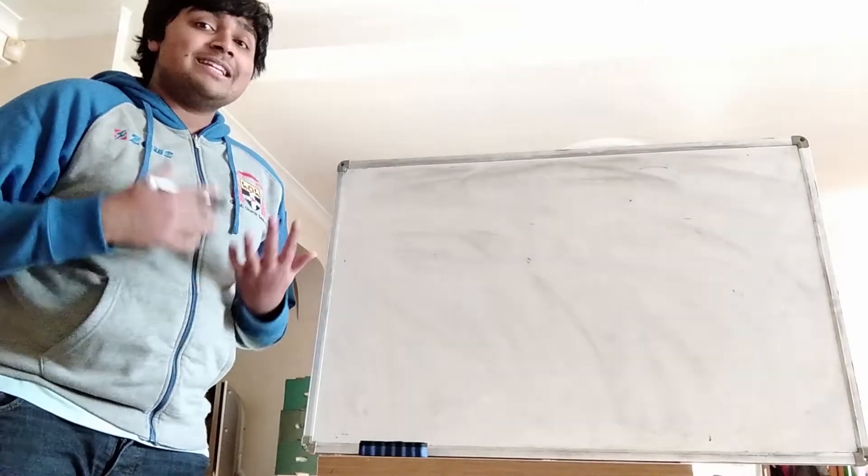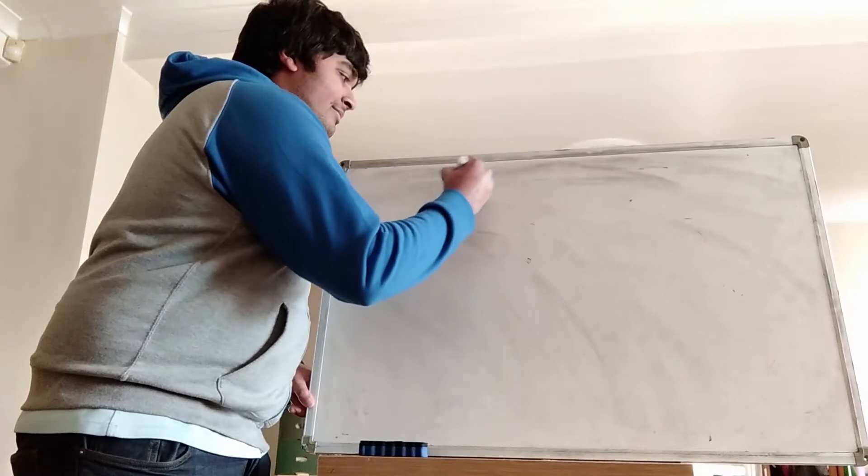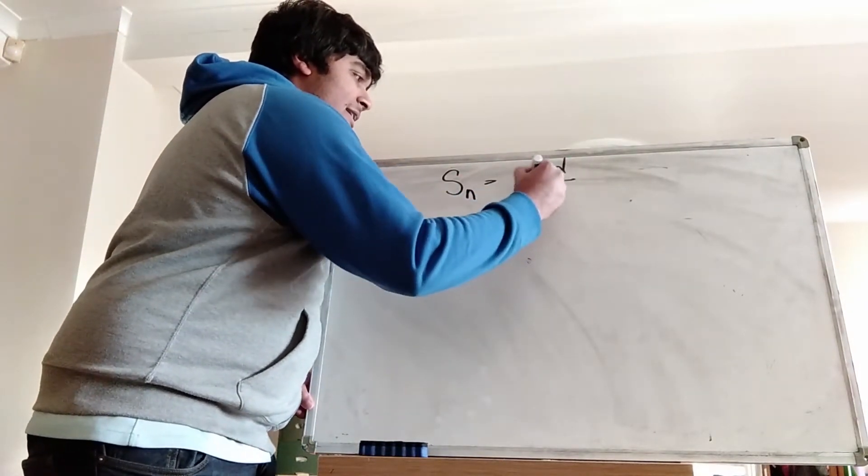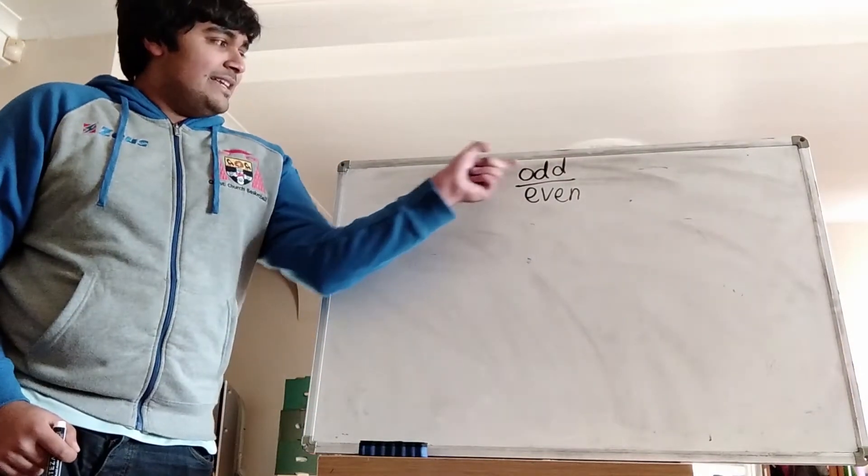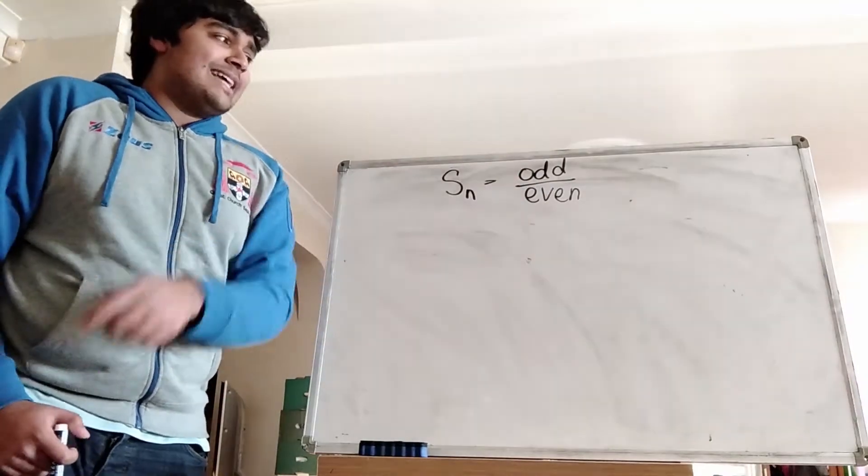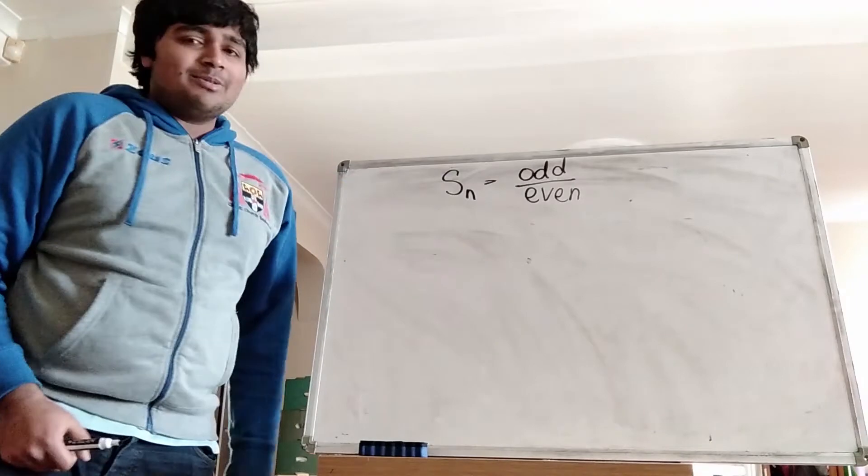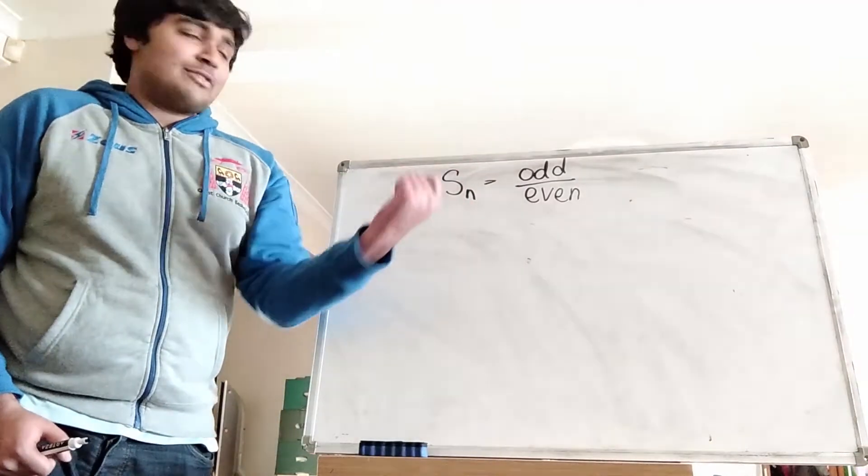Okay, so the answer to this problem is no, and the reason it's not is I claim that Sn is always in the form odd divided by even. This can never be an integer because we've got something on the denominator which is at least 2, and we can never cancel these down because this has a factor of 2 but the top doesn't. So we can never cancel this down to an integer, and thus Sn is never an integer.